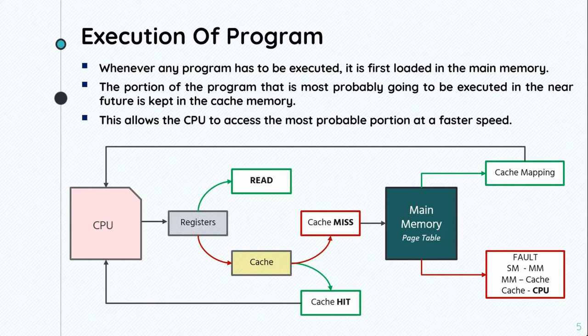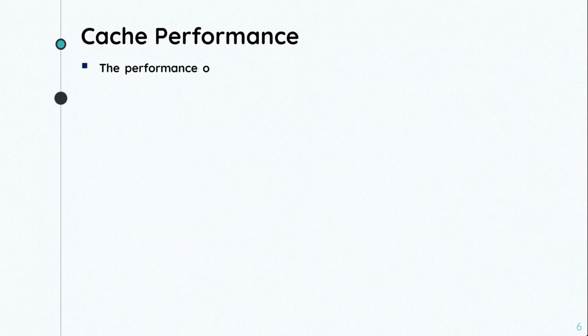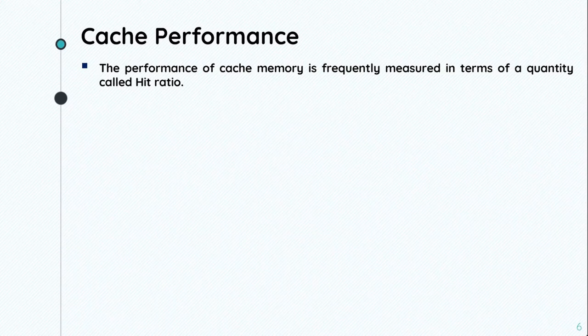Cache performance is measured in terms of a quantity called hit ratio. The performance of cache memory is frequently measured in terms of a quantity called hit ratio.